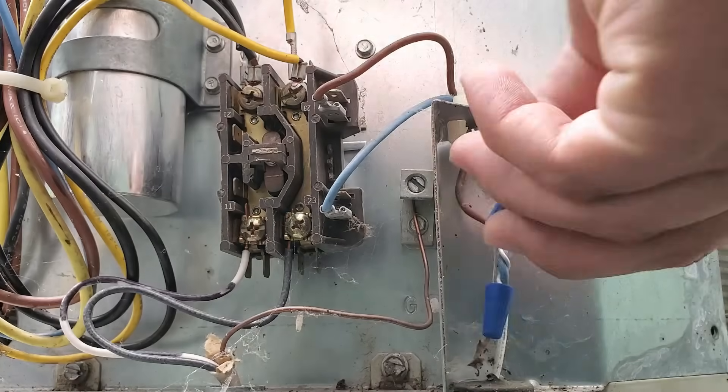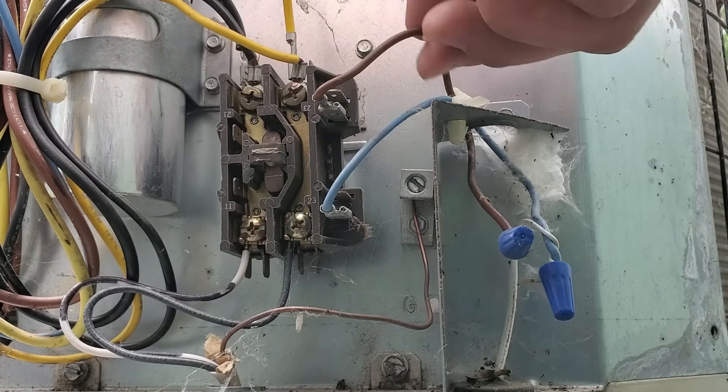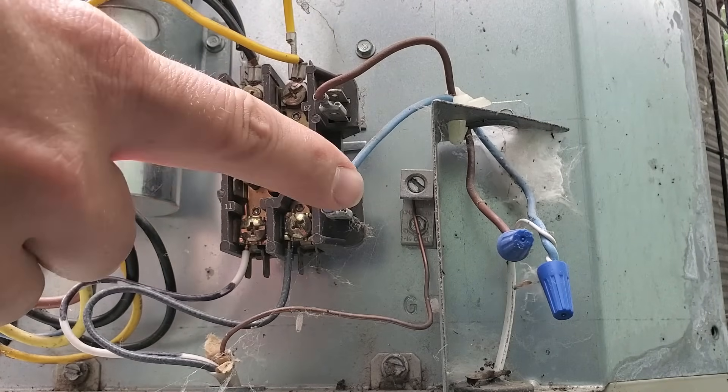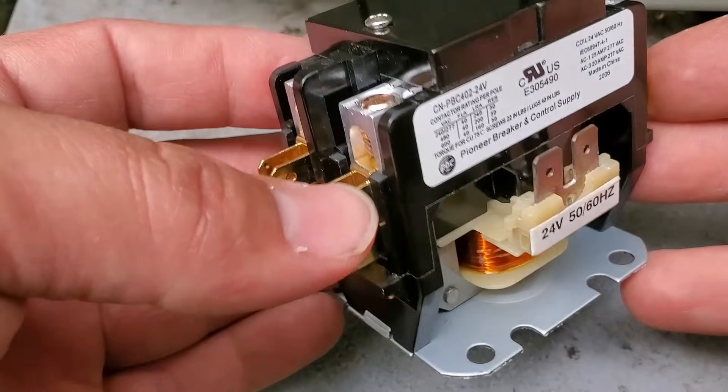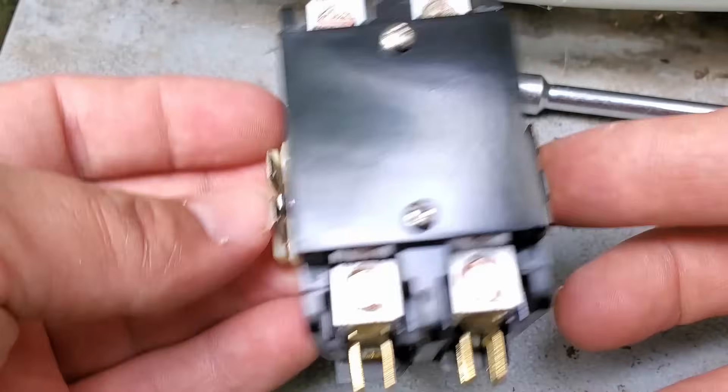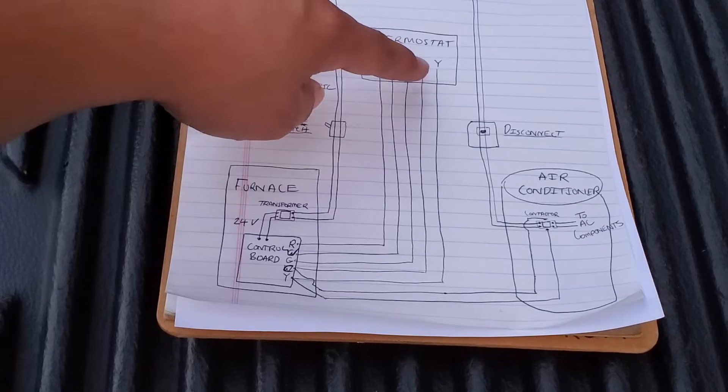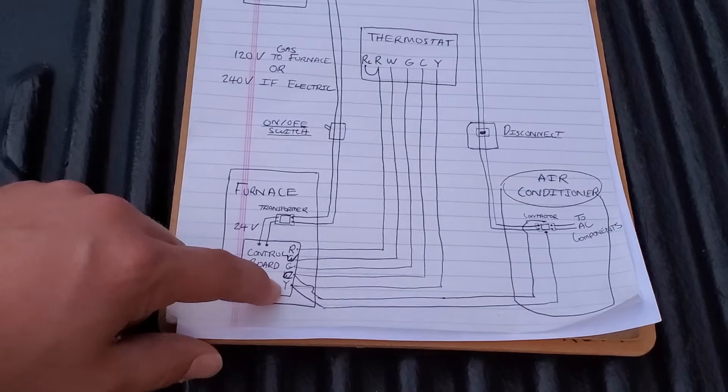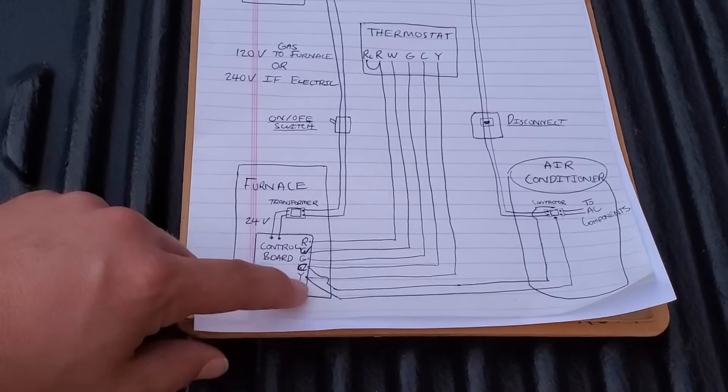Over here you can see we have our thermostat wires coming into the air conditioner which then attach to this brown and blue wire which go onto the contactor itself. This is the 24 volt control voltage coming from the thermostat. This is more typical for the thermostat wires to attach one on either side of the contactor like that. Now the Y wire comes all the way down and connects onto the furnace, and then that Y wire comes from the air conditioner and hooks onto that exact same terminal.